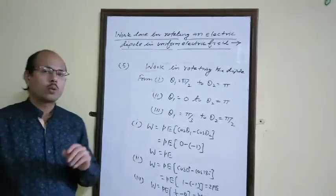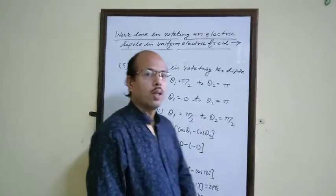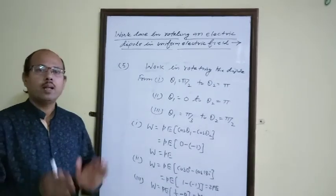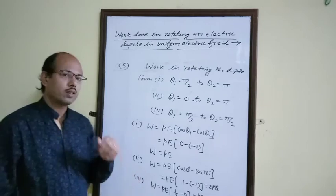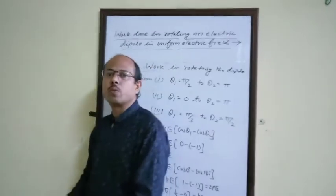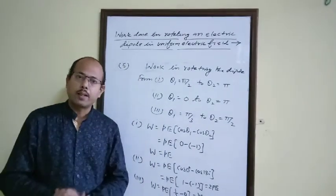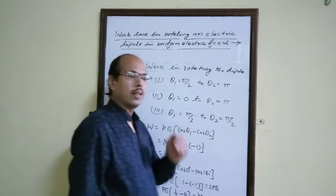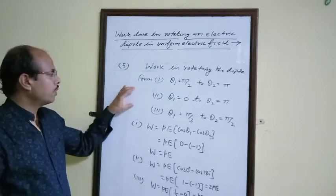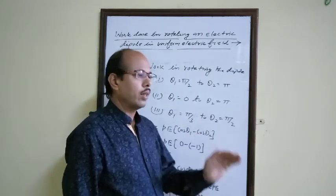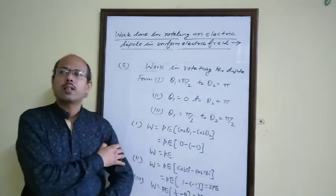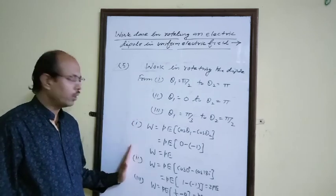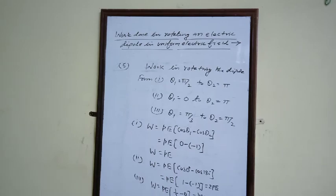Now I think you understand the concept of work done in rotating the dipole and potential energy of the dipole in uniform electric field, along with conditions for stable and unstable equilibrium. The formulas discussed today are: torque = PE sin theta, work done W = PE(cos theta₁ minus cos theta₂), and potential energy U = minus PE cos theta, or equivalently U = minus P dot E. Thank you.